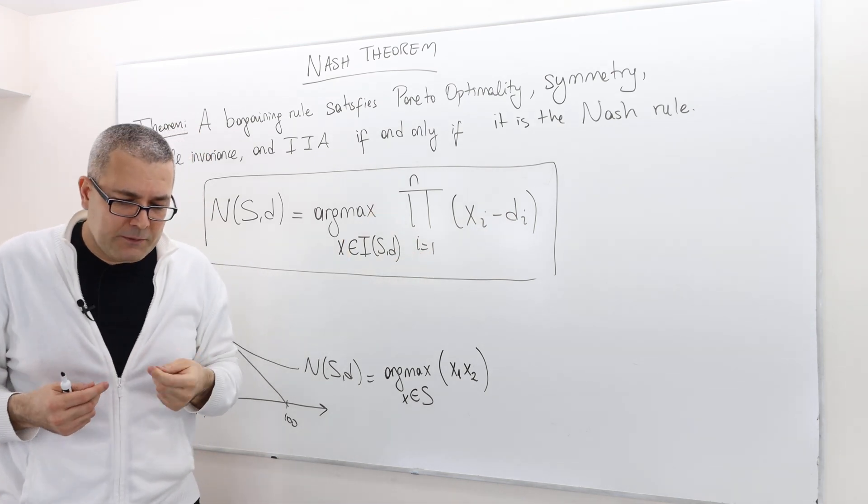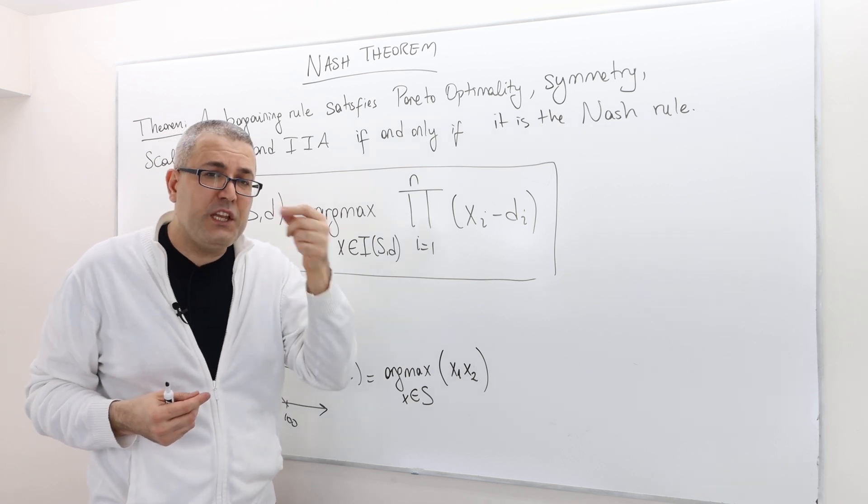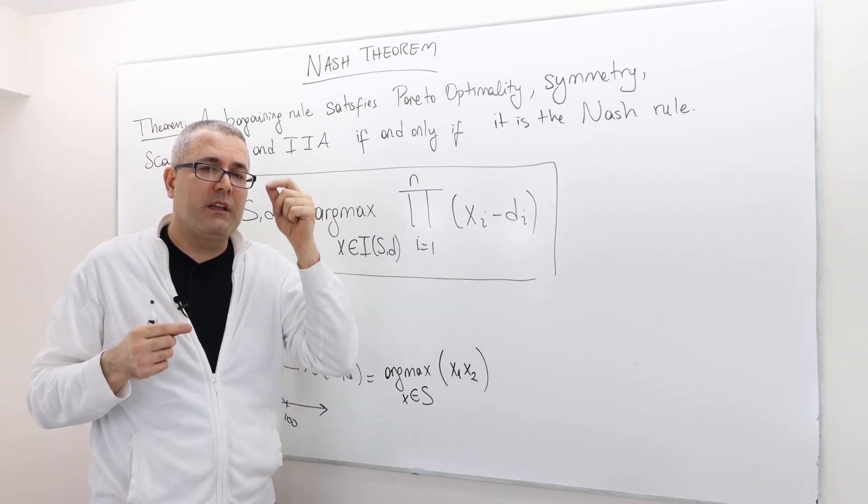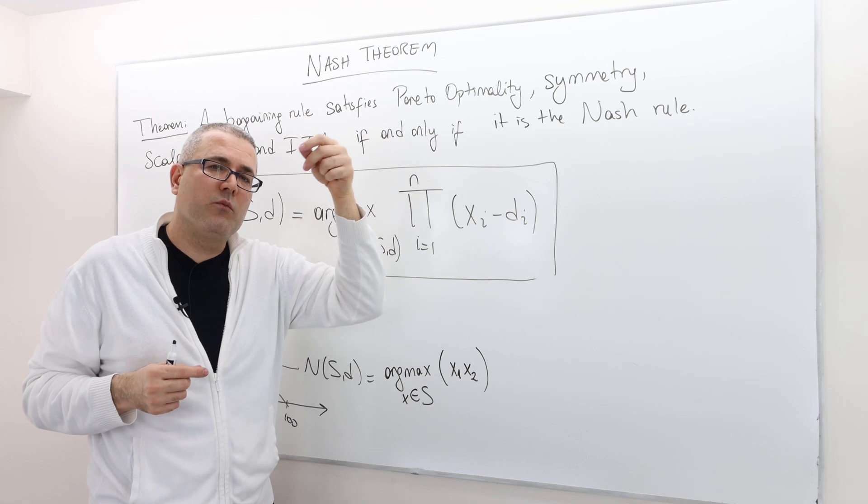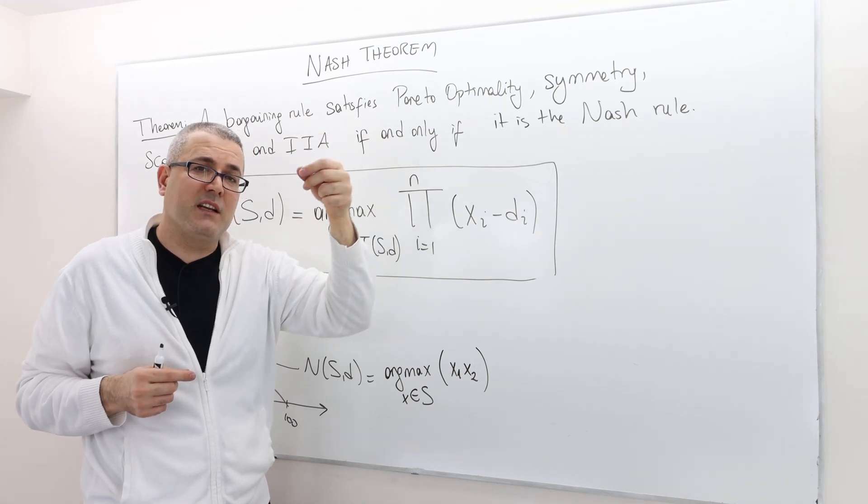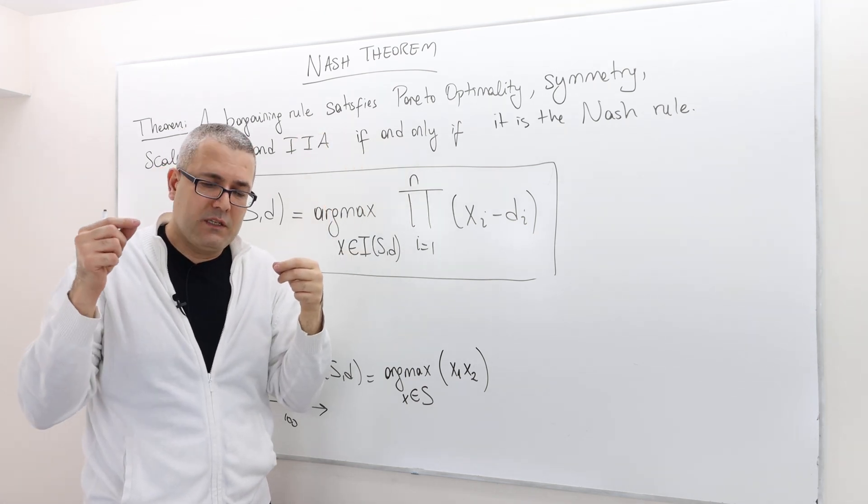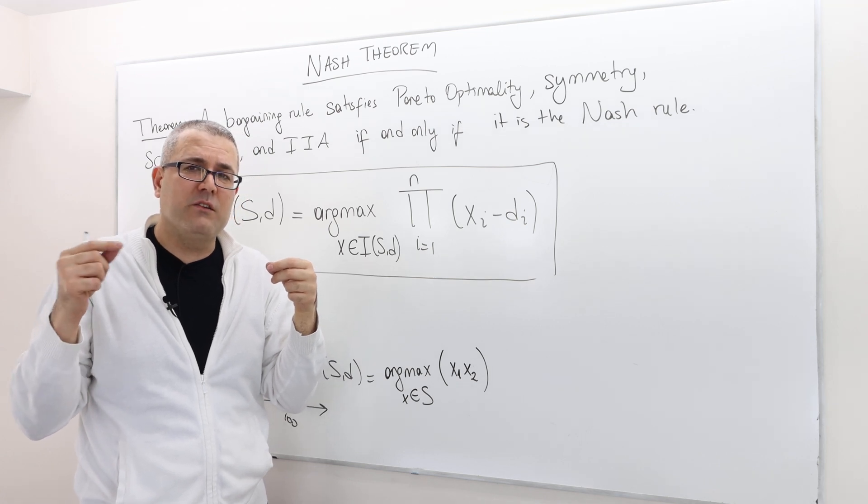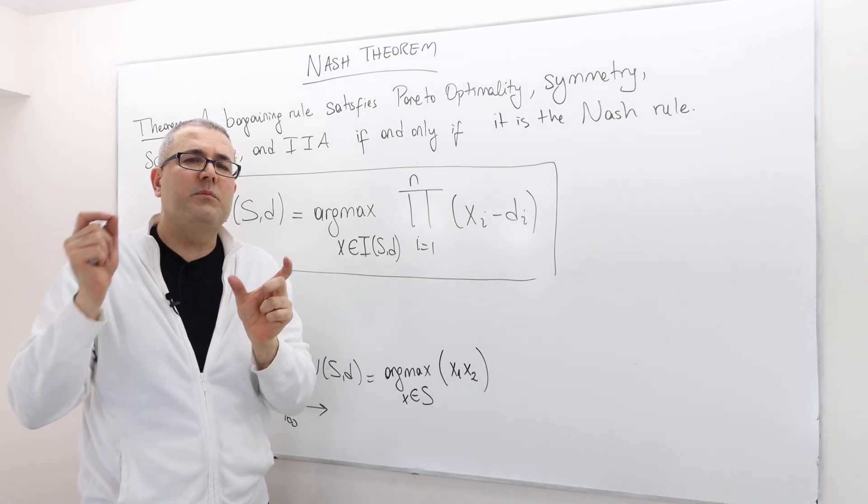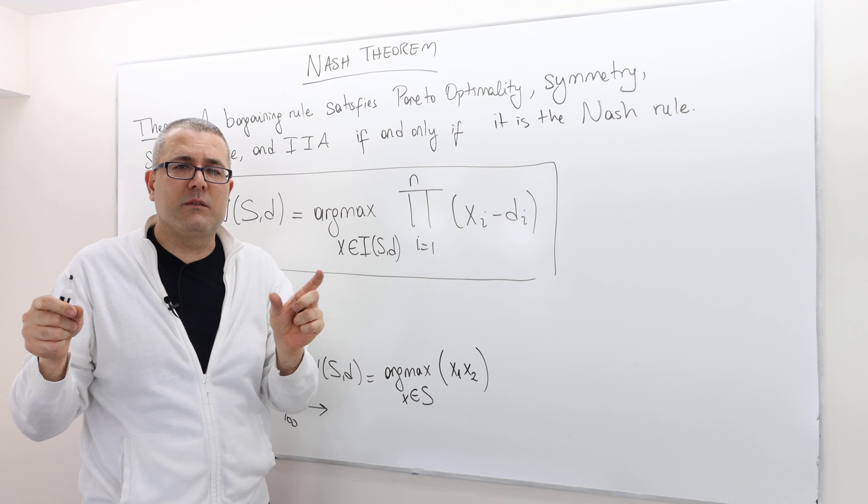So basically, for each player, it looks at what this player is going to get, X_i, subtract his disagreement value, d_i, and then multiply it with the second player,